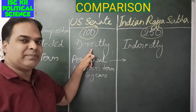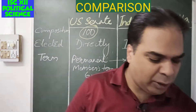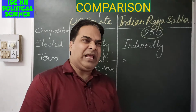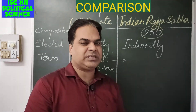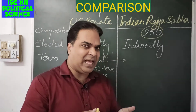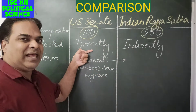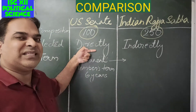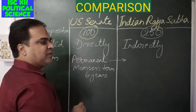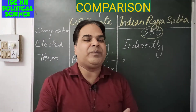Regarding how members are elected: US Senate members, or senators, are elected directly by the people. From 1913 onward, through the 17th Amendment to the US Constitution, indirect election was replaced by direct election. This means senators are now directly elected by the people of the 50 states, and this has increased the powers of senators manifold compared to members of the Indian Rajya Sabha.